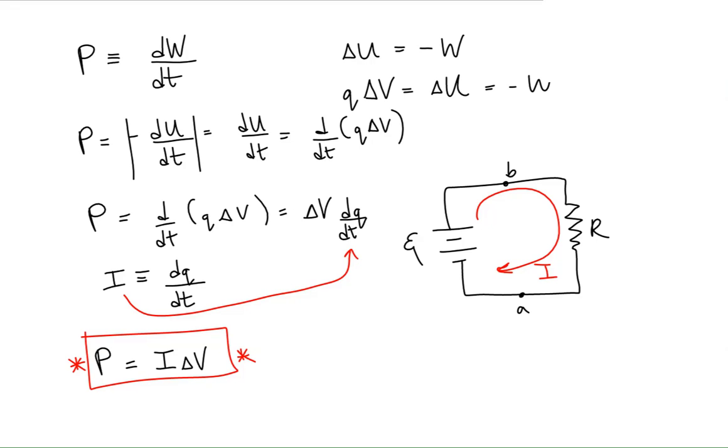So we could take this expression for power and apply it to a resistor. I like to redraw my circuits because it's good practice for us. So we'll just redraw this on this page. Here is our EMF, I'll just call that delta V for now. And here is our resistor. And this will indicate the current.